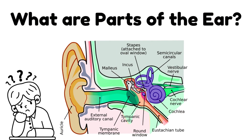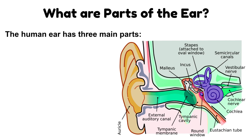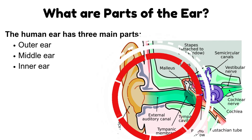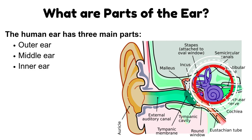What are parts of the ear? The human ear has three main parts: outer ear, middle ear, and inner ear.